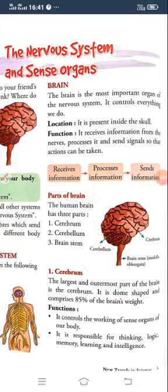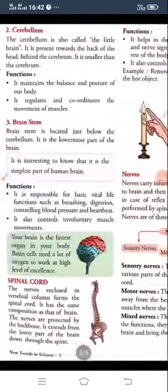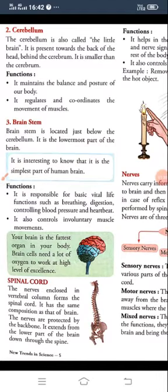The brain is divided into three parts: one is cerebrum, another one is cerebellum, and the third one is brain stem. Cerebrum is present on the upper part, cerebellum is present in the lower part of the brain, and brain stem is like a stem that is also known as medulla oblongata. The function of the cerebrum is to control the working of sense organs, and the function of the cerebellum is to maintain the balance and posture of our body.